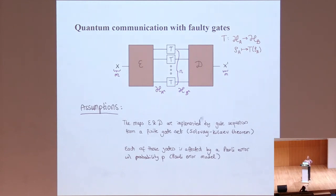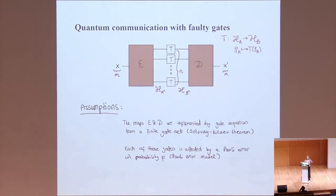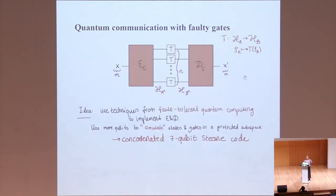For this scenario, we define a capacity that we call the entanglement-assisted fault-tolerant capacity. We still consider assistance by entanglement, but we think of these maps as actual objects you want to build and implement, and they have an error model associated. We are assuming a Pauli-IID error model where each gate has a probability to be affected by a Pauli error with probability P. It's one of the simplest error models — more of a proof of principle that we can still find a rate in the presence of noise.